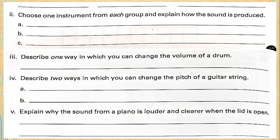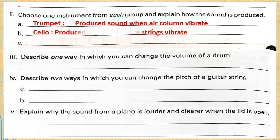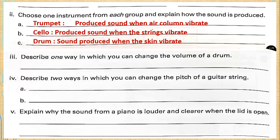The second part of this question is: choose one instrument from each group and explain how the sound is produced. So in first group, we will take trumpet that produces sound when air column vibrates. From the second group, we will take cello, which produces sound when the strings vibrate. And from the third group, we will take the drum where the sound is produced when the skin vibrates.